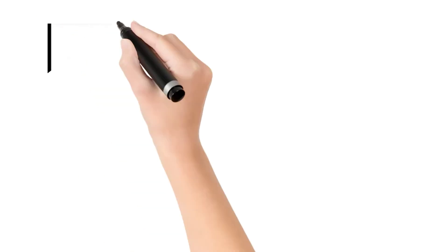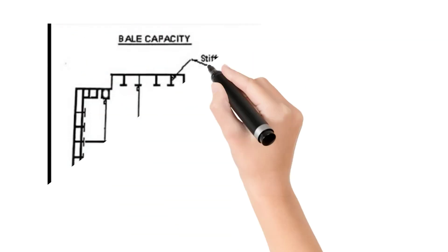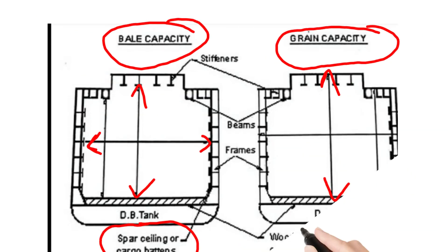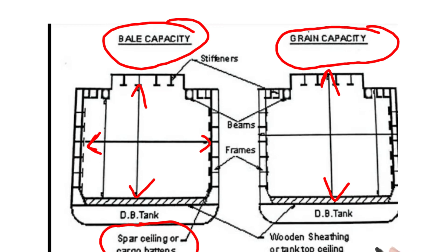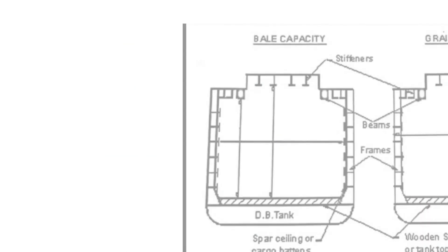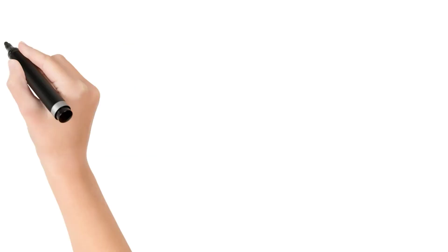In this picture you can see what the spar ceiling is and how the grain capacity measurement is taken from the extreme end.